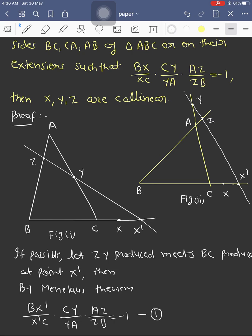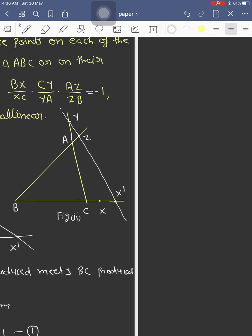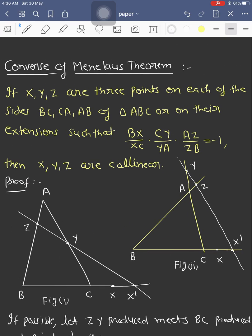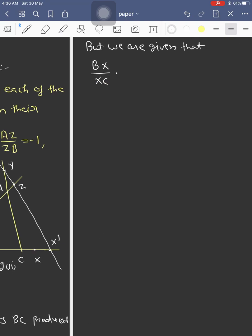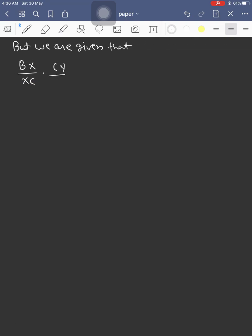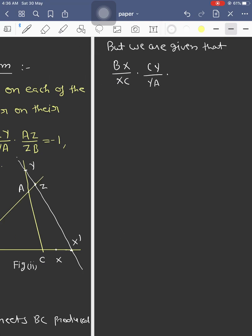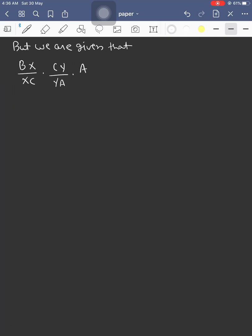But in the question, we are given that BX/XC × CY/YA × AZ/ZB = -1.